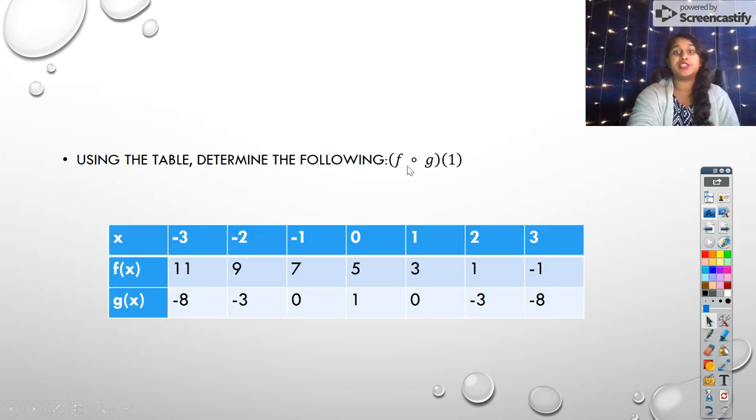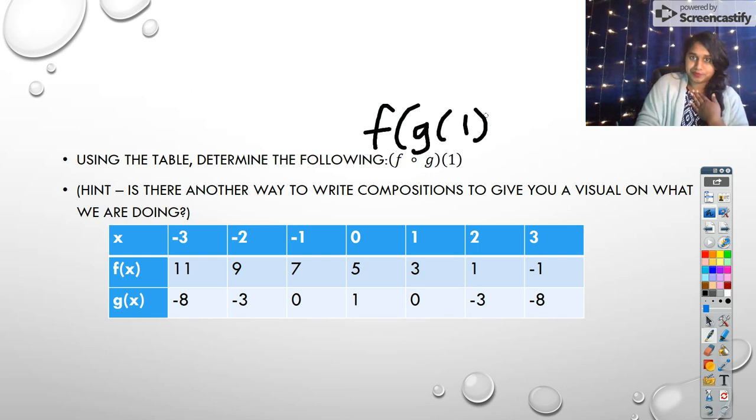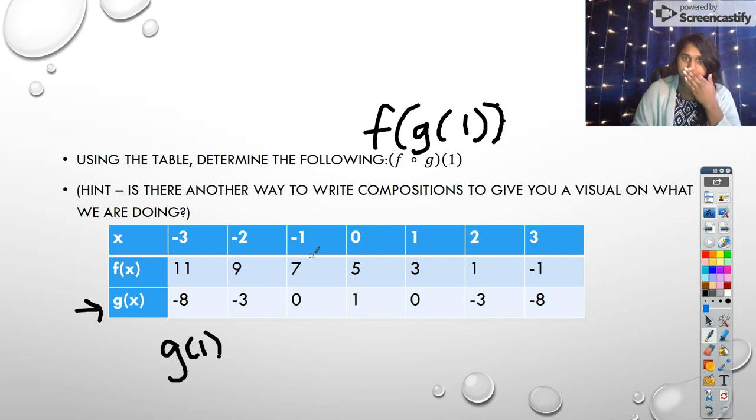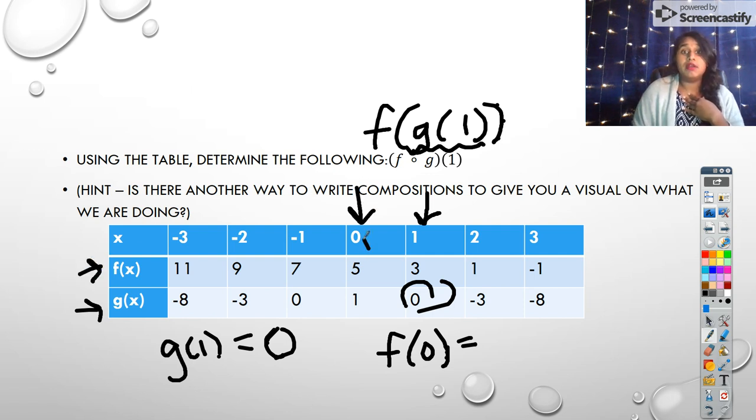We have a question here. Use the table determining the following. And here's our table. But my hint to you is, what's another way we can write a composition? So I can recognize what this is. The other way I can write a composition is f composed g of 1. Well, this helps us recognize, hey, I can just break this down into parts. Well, what is g of 1? Well, I go to my g. And I go all the way to x equals 1. And there's my answer. It's 0. So I plug this in right here. And that becomes f of 0. So I go to my f. And I go to my 0. And there's my end answer. My answer should have been 5.